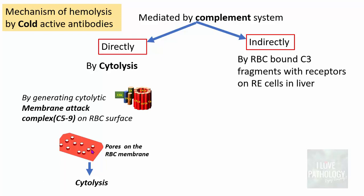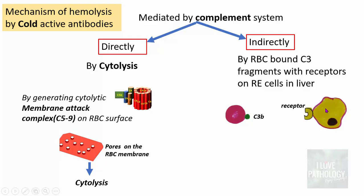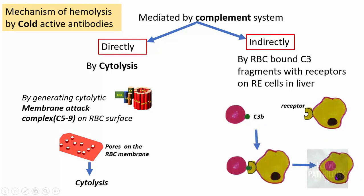The indirect mechanism of hemolysis by cold antibodies involves RBC-bound C3 fragments interacting with receptors on reticuloendothelial cells in the liver. Specifically, C3b binds to Kupffer cells, which have a receptor for C3b, leading to receptor–ligand interaction and phagocytosis. This is the indirect complement-mediated way of hemolysis.